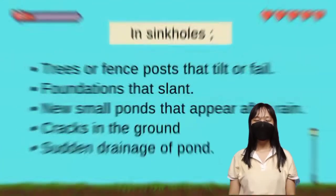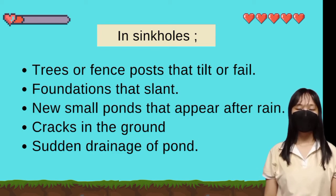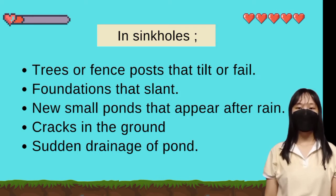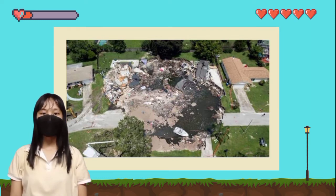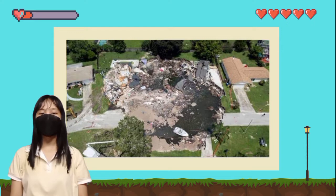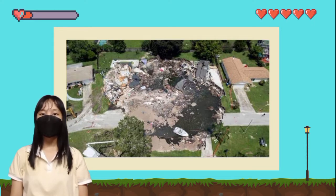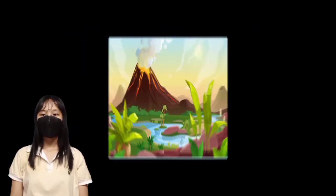Signs of Impending Geological Hazard — Sinkholes and Volcanic Eruption. In sinkholes, trees are displaced or killed, foundations slant, new smoke pans appear after rain, cracks in the ground, and sudden drainage of ponds. In sinkholes, the tilting and sinking of soil is the reason why the positions of houses and land are destroyed, causing small pond-like formations when it rains.